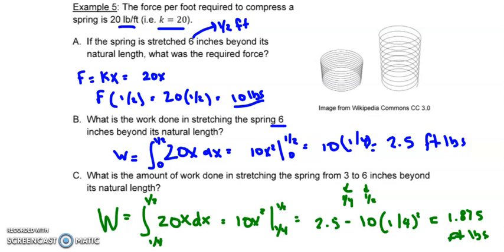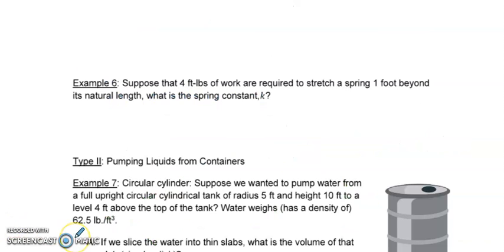And I'm going to do one more example before we go on to the next type of variable force. And this is the last spring constant example. So they're telling us that we're using four foot-pounds of work. That is our work already. So we're going to put it in a formula, four foot-pounds of work.